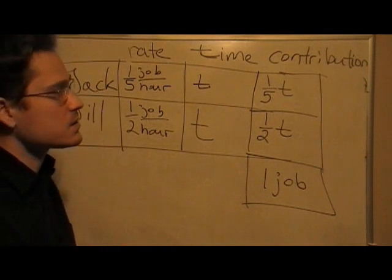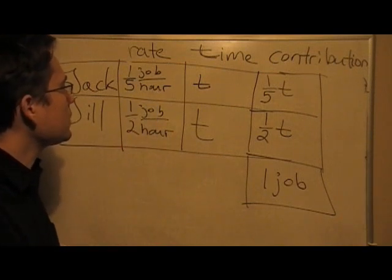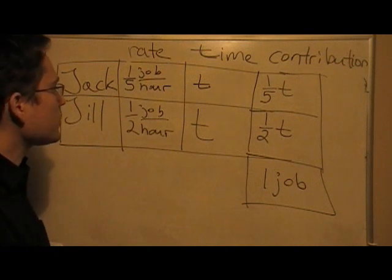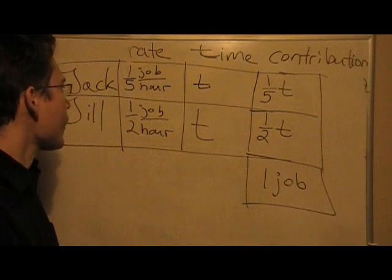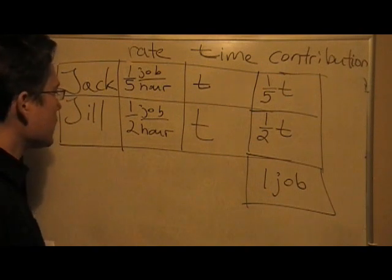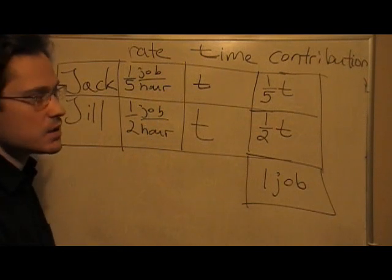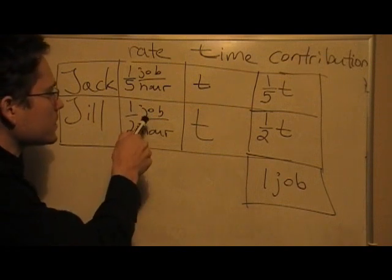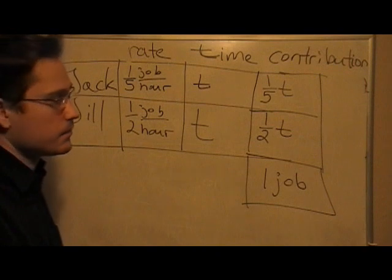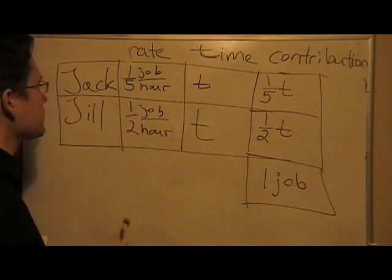Another way to interpret this is as follows. One job every five hours would be, if you take one every five and you write it as a decimal, it's 0.2. So, it would be two-tenths of a job every hour. And likewise here, one job every two hours is the same as half a job every one hour. So, these are the work rates of Jack and Jill.